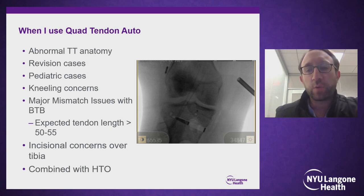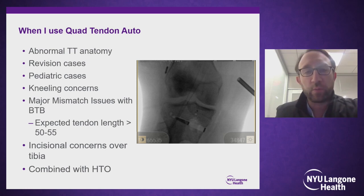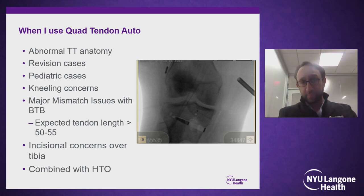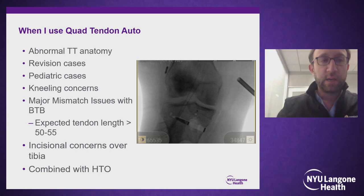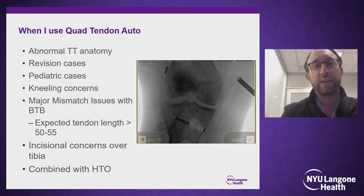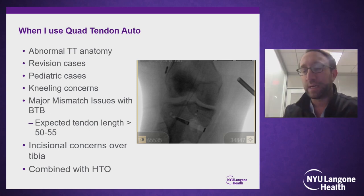When do I use quadriceps tendon autograft? Certainly not in all players, nor do I recommend it for everybody. Having a useful armamentarium of options as a sports medicine surgeon is the most important thing we can do. For me, my initial graft choice is still bone-patellar-tendon-bone, despite some of the biomechanical advantages of quadriceps tendon. That said, quadriceps tendon has certainly come over hamstrings as my second most utilized graft choice.